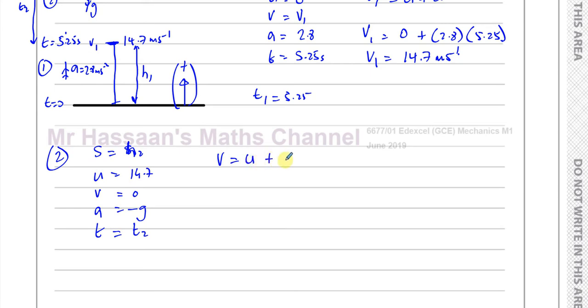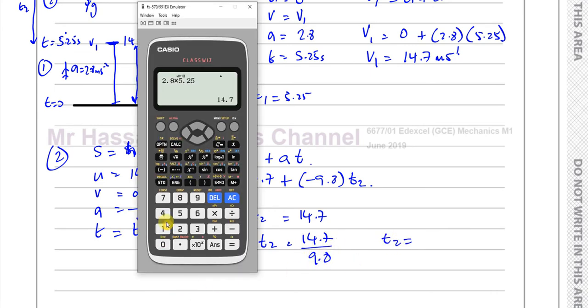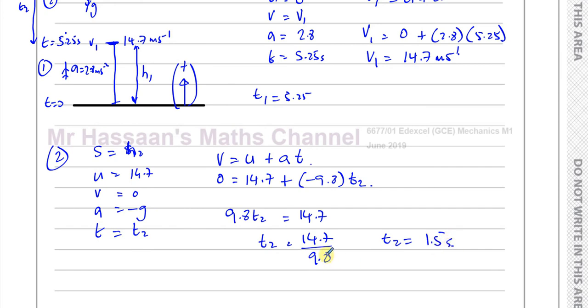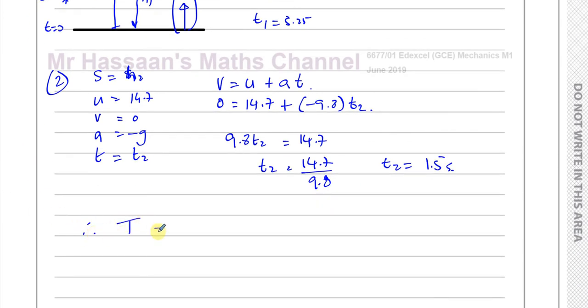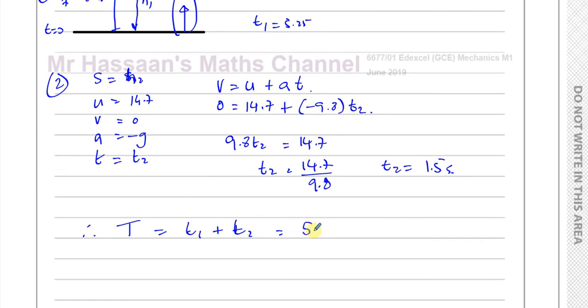We need to find what T2 is. Again, we can use V equals U plus AT. We know V is 0, U is 14.7, G is minus 9.8, and T is T2. So if I rearrange this, I'll have 9.8 times T2 equals 14.7. So T2 is 14.7 divided by 9.8, which gives us 3 over 2, which is 1.5 seconds. Therefore, T is T1 plus T2, which is 5.25 seconds plus 1.5 seconds. That's going to give me 6.75 seconds.